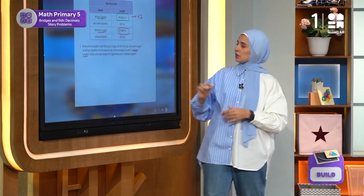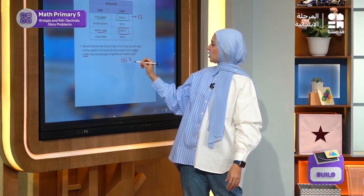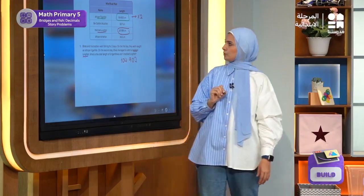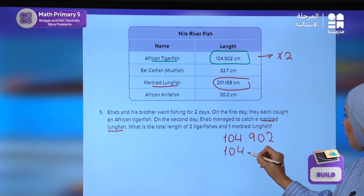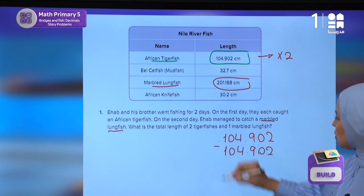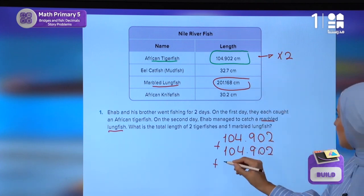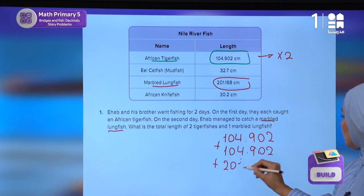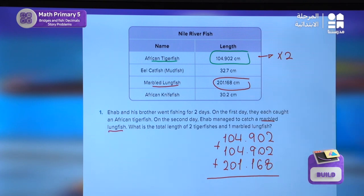Let's write all the numbers aligned. I will start with 104.902, then write it again: 104.902. These are the first two numbers. I still need to add the third number, which is 201.168. The first thing we need to do is align our decimal numbers, then we're going to start adding.